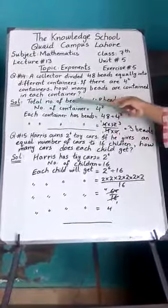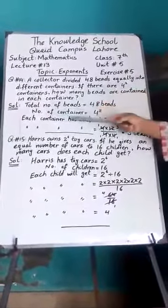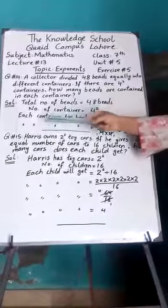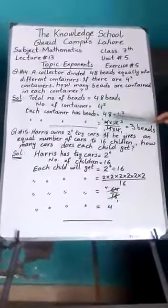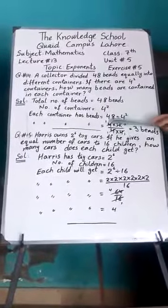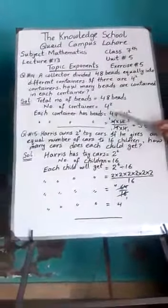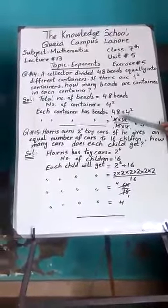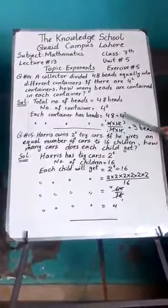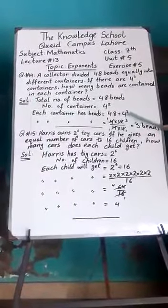For solution, total number of beads is equal to 48 beads, number of containers 4 square. Each container has beads, we will divide 48 divided by 4 square. 48 means students 4 multiply by 12 and divided by 4 square means its power, its exponent is 2.